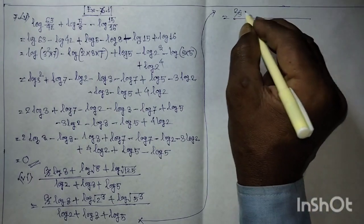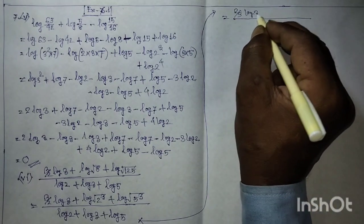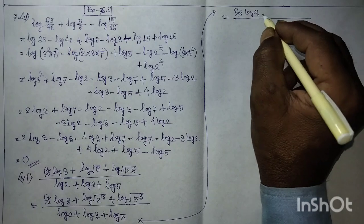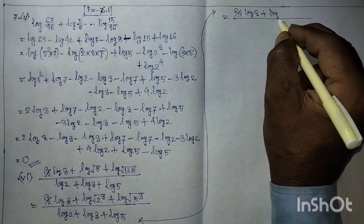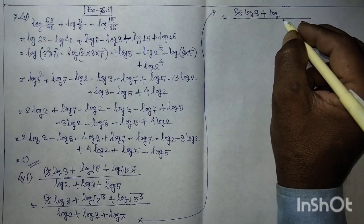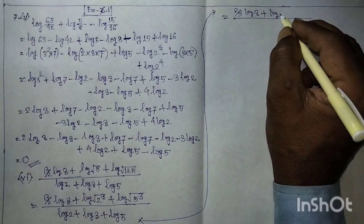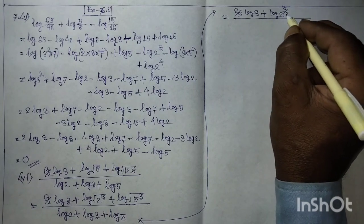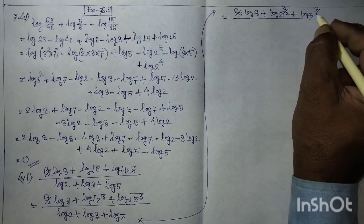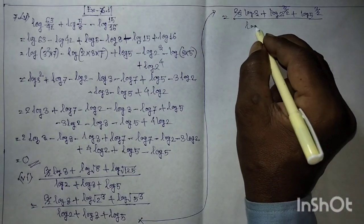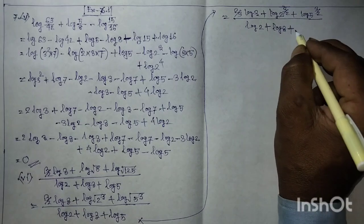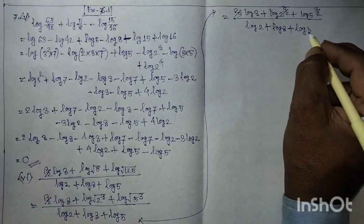Simplify the numerator: (2/3)·log 3 plus (3/2)·log(2^(3/2)) plus log(5^(3/2)), divided by log 2 plus log 3 plus log 5.